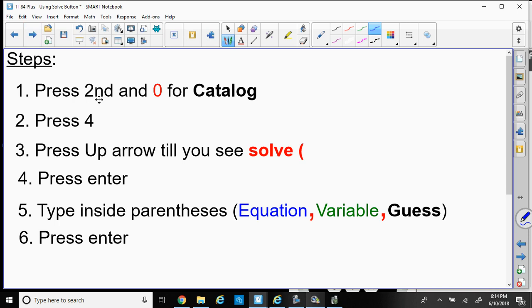Step 1: press 2nd and 0 to get the catalog menu. Step 2: press 4. Step 3: press the up arrow so you see the word solve with a parenthesis. Step 4: press ENTER. Step 5: type inside the parenthesis your equation, comma, variable, comma, and your guess and close the parenthesis. Then press ENTER.